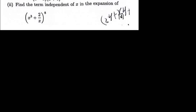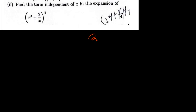A term independent of x is the term that doesn't have x. For example, if I have 1 + x², a term independent of x is going to be the first term. The first term is the term independent of x. One thing I want you to understand is how do we find the term?